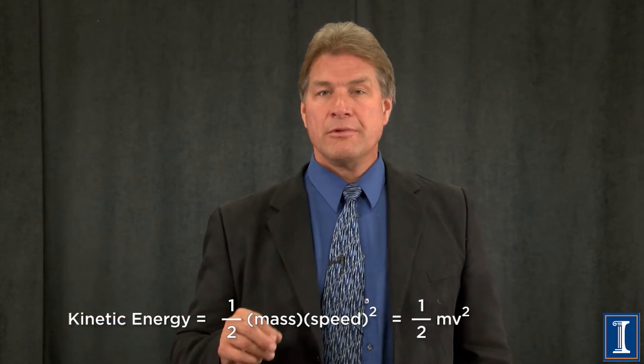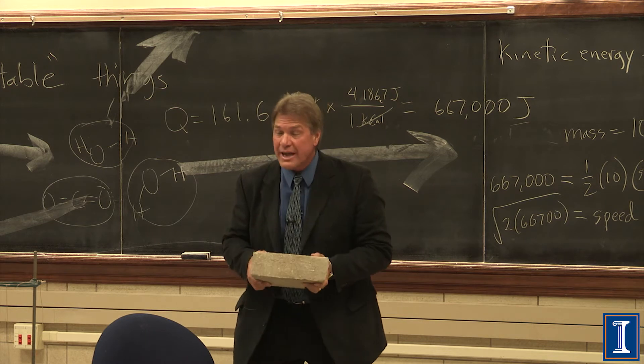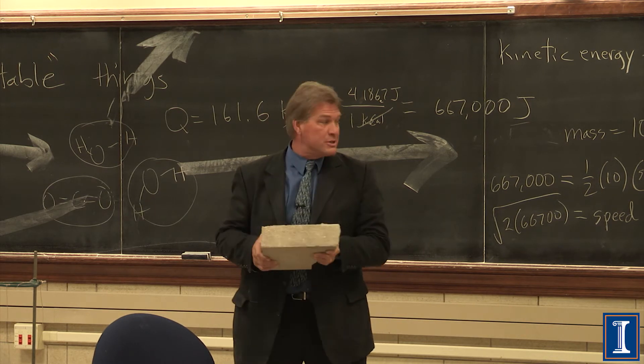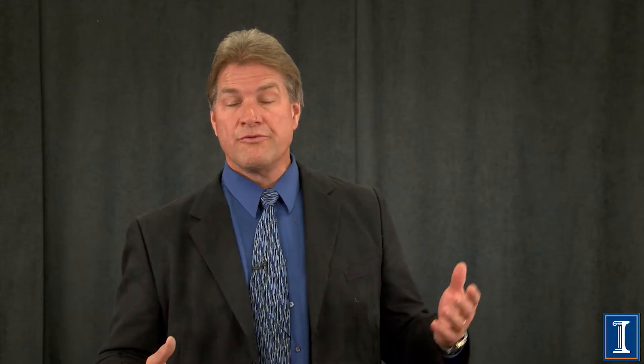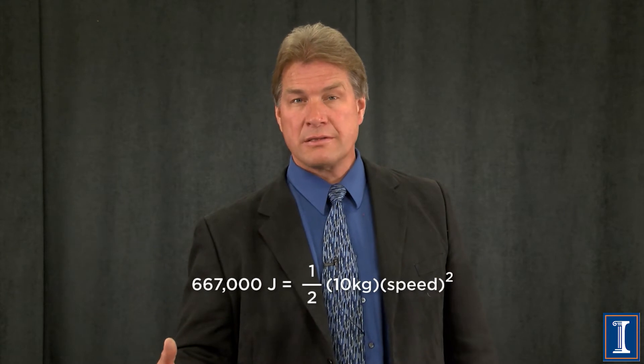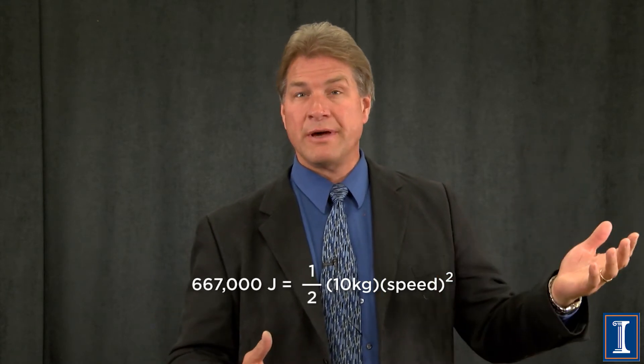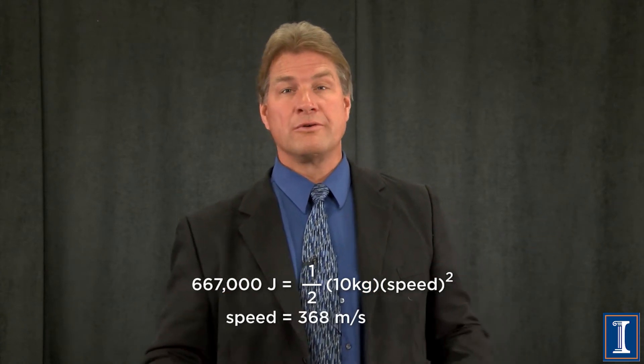In common physics language, it's one-half mv², where V is for velocity. The real key is it gives us a means to say: if I could convert all of that energy into motion of some mass with a certain value, I can tell you how fast it will go. For example, a concrete block — 10 kilograms, 22 pounds. How fast could I make it go by burning a whole shot glass of methanol, a mole of methanol? If we do the math, that 161.6 kilocalories converts to about 667,000 joules. Take a 10 kilogram mass, divide by 10, multiply by 2, take the square root, and you get 368 meters per second.